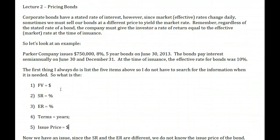In the previous video we looked at simple examples of just a basic bond issued at face. Now let's look at pricing bonds. Corporate bonds have a stated rate of interest, however since the market rate or the effective rate can change daily, sometimes we have to sell our bonds at a different issue price than the actual face value. Anytime there's a difference between the stated rate and the effective rate, we must price our bonds different than the face value in order to yield the proper rate of return.